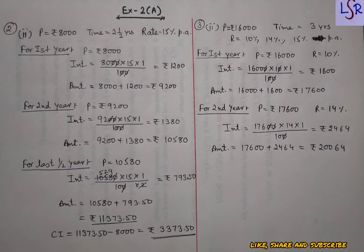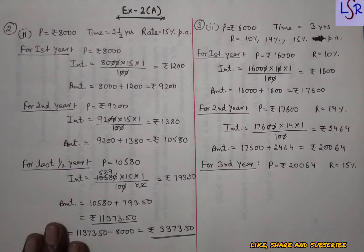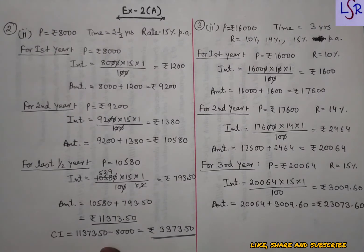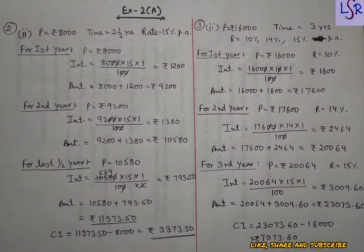For the third year, we take 20,064 as the principal and apply the rate of 15 percent. The interest comes to 3009.60, and by adding this interest we get the final amount. We then find the compound interest for this question by subtracting the original principal from the final amount.